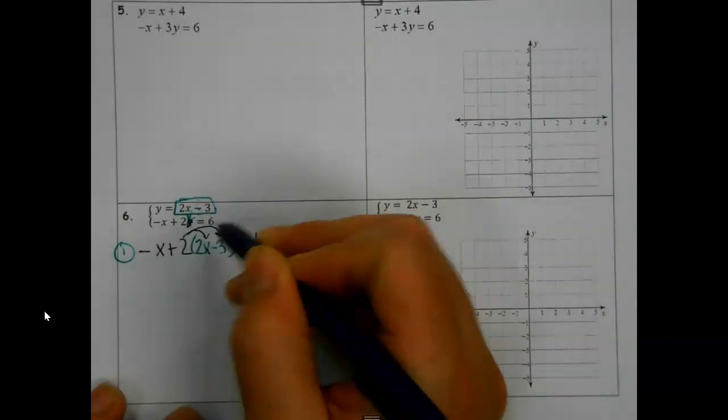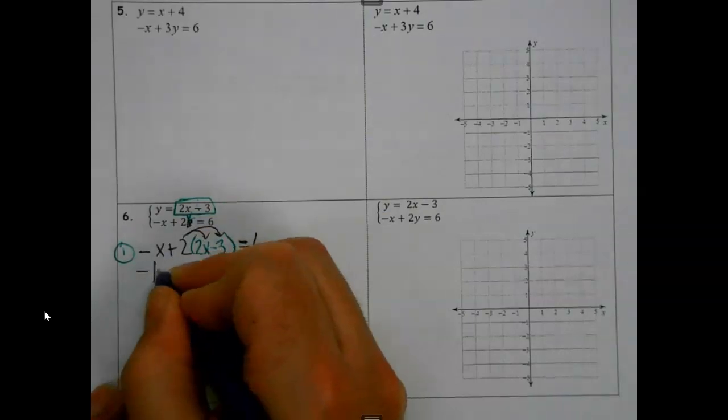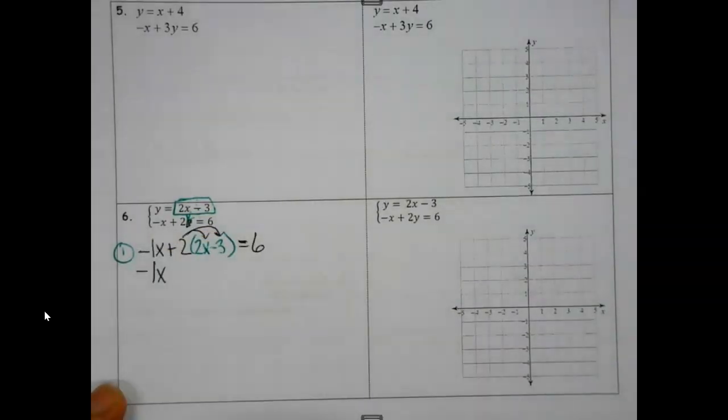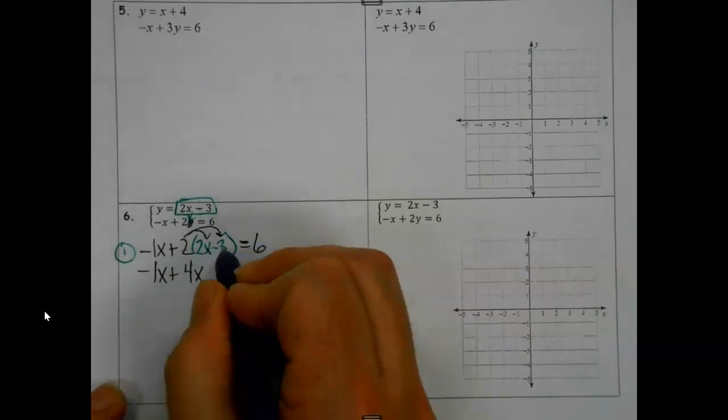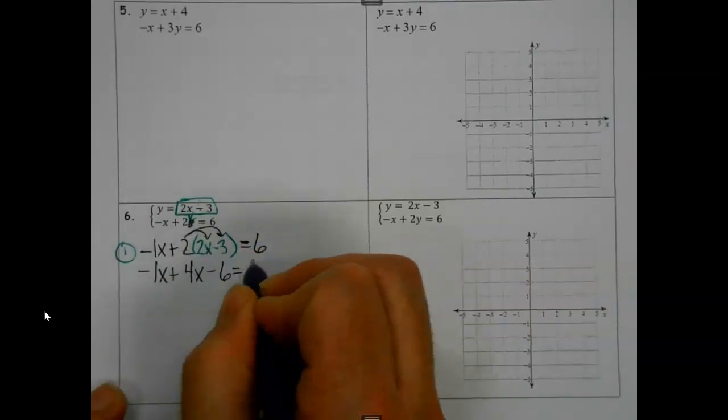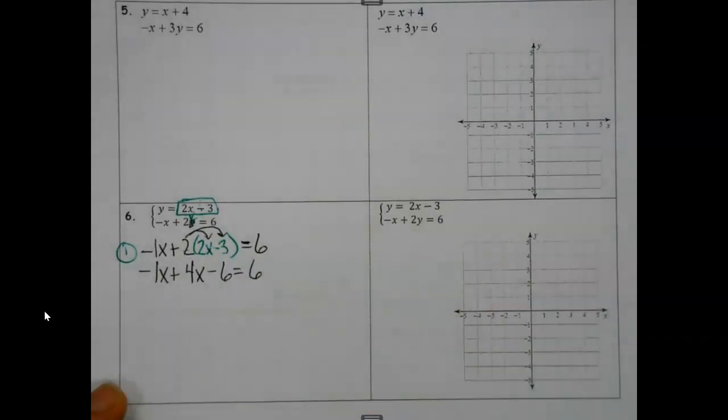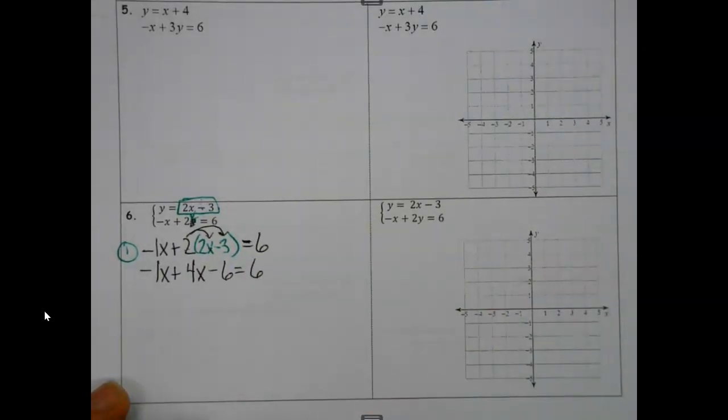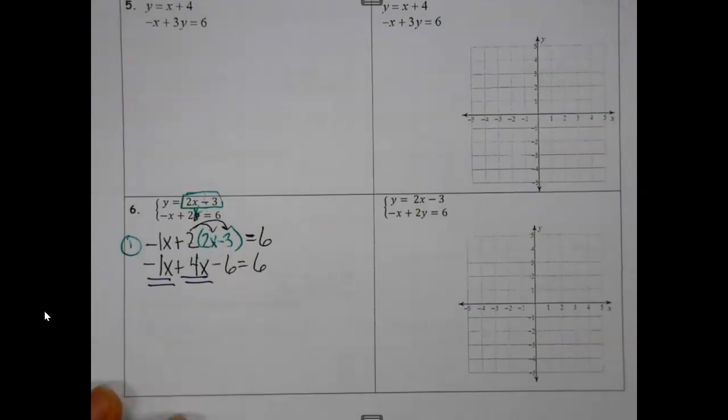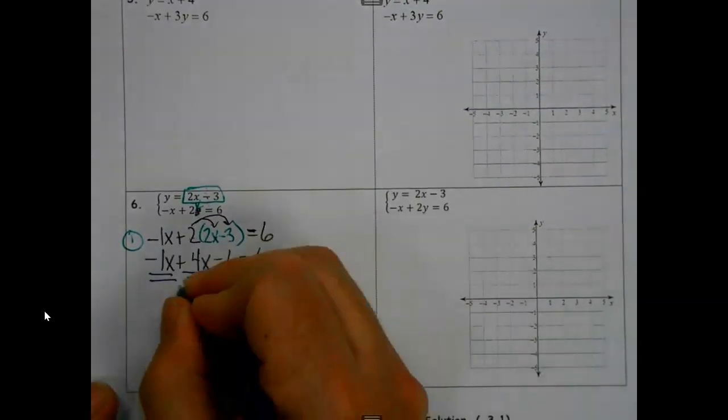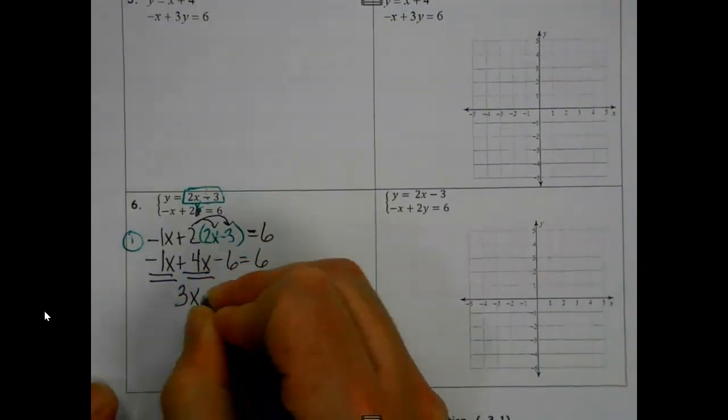A little distributing. Again, I like to put a one with my x if there's not a number there, just so I don't forget it. And then we're multiplying the two times each of these. So that takes care of our parentheses and gives us the opportunity again, since the x's are all together on the same side, to combine those.